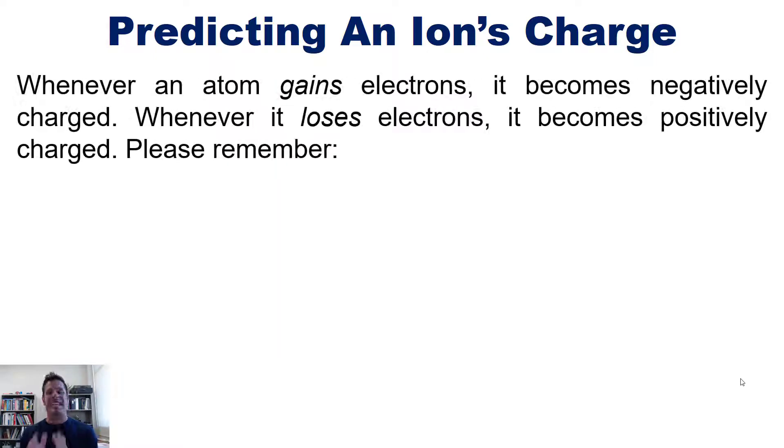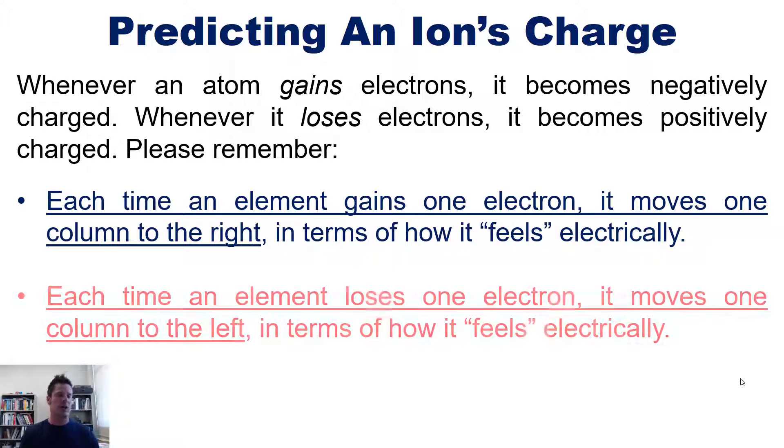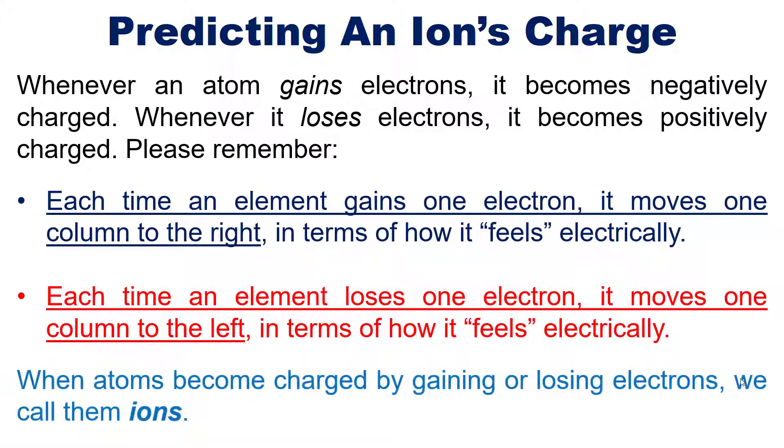Now, whenever an atom gains electrons, it becomes negatively charged. Whenever it loses electrons, it becomes positively charged. Now, please remember, each time an element gains one electron, it moves one column to the right in terms of how it feels electrically. In contrast, each time an element loses one electron, it moves one column to the left in terms of how it feels electrically. When atoms become charged by gaining or losing electrons, we call those atoms ions.